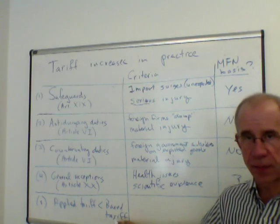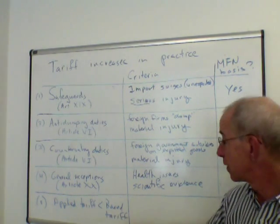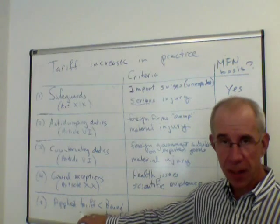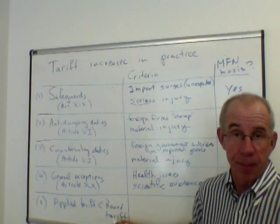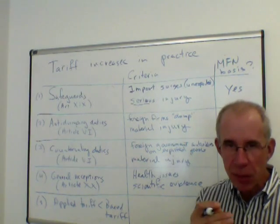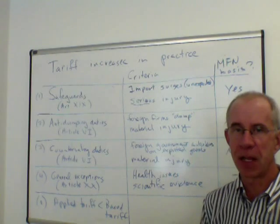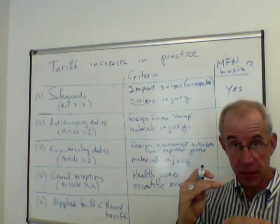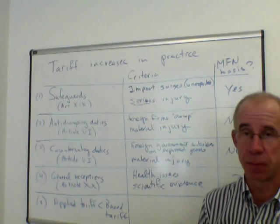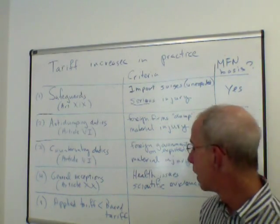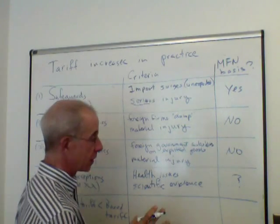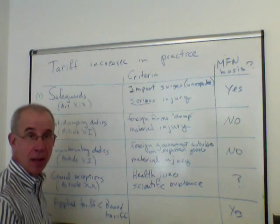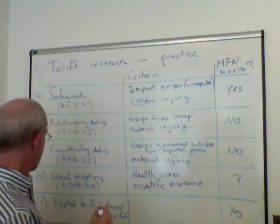Tariff overhang is more relevant for developing countries because, for example, in the United States almost all applied tariff rates are essentially at the bound tariff rates, so there is very little overhang and very little wiggle room. Whereas many developing countries have been very reticent to lower their bound rates so that they can retain the ability to raise tariffs if they feel the need. However, there are still obligations under the WTO system: those applied rates can be increased up to the bound rates, but they must be done on an MFN basis — you cannot raise tariffs only on some countries and not on others.